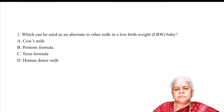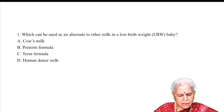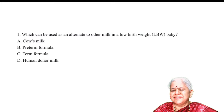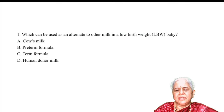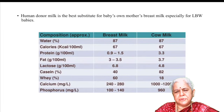The first question is: which can be used as an alternative to mother's milk for low birth weight babies? The options are cow's milk, pre-term formula, term formula, and human donor milk. Human donor milk is the best substitute for a baby's own mother's milk, especially for low birth weight babies. D is the correct answer.